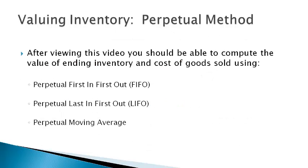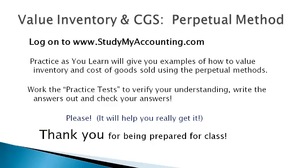After viewing this video, you should be able to compute the value of ending inventory and cost of goods sold using the FIFO, LIFO, and moving average methods under the perpetual method. Please go to studymyaccounting.com and work through the practice examples to learn how to compute the value of inventory and cost of goods sold using the perpetual method. Then work the practice test. Please write out your answers and check your understanding against the answers provided. Thank you for being prepared for class, it is much appreciated.